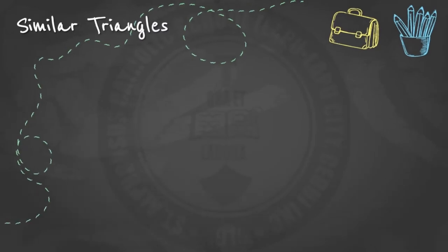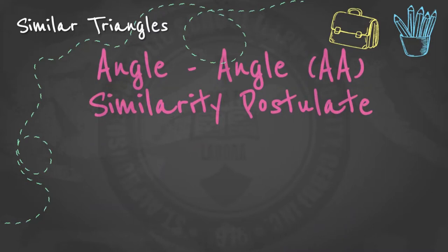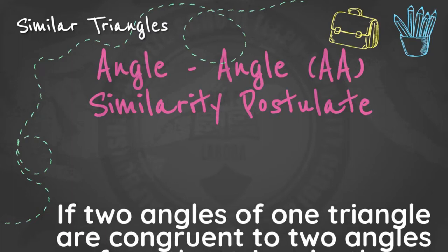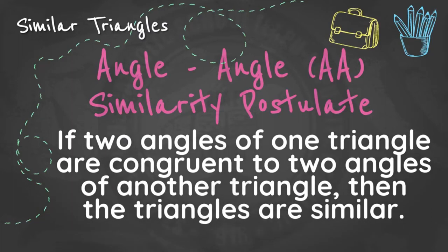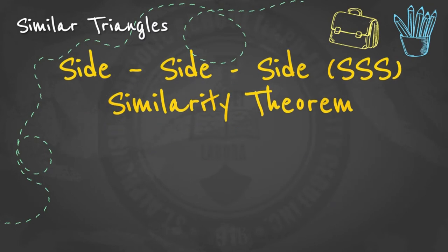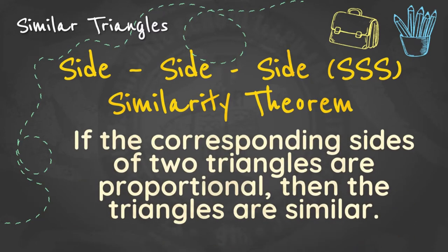Let us now consider the different postulates in dealing with similar triangles. We have the Angle-Angle similarity postulate, or AA postulate: if two angles of one triangle are congruent to two angles of another triangle, then the triangles are similar.